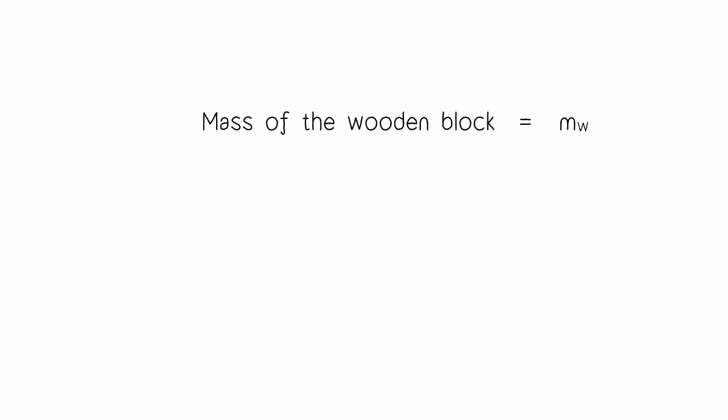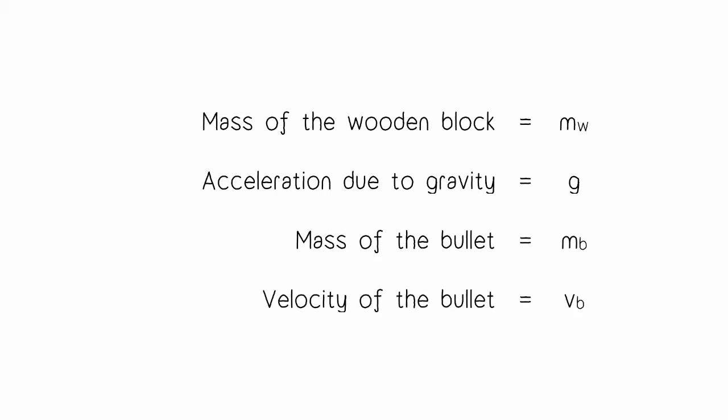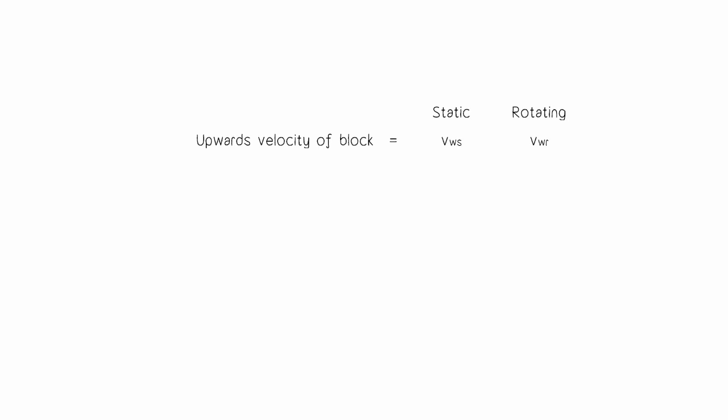The variables we need to consider: first, the mass of the wooden block, which I'll refer to as Mw. Then there's the acceleration due to gravity, G. There's the mass of the bullet, Mb. And the velocity of the bullet the moment before impact, Vb. There are also some other properties following the impact which we need to take into account, and these vary depending on the static and rotating blocks.